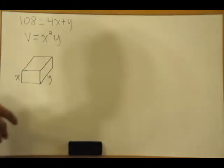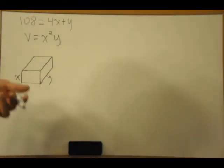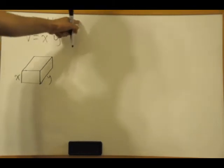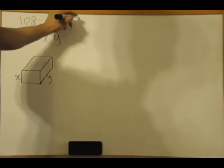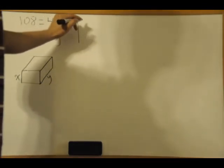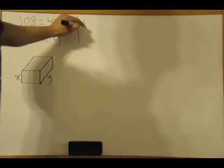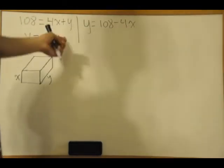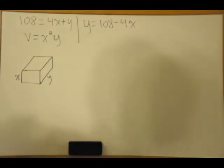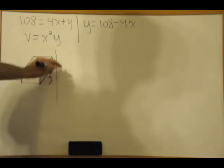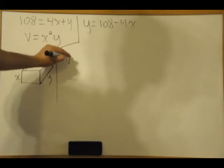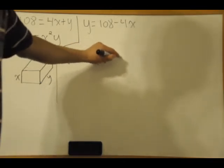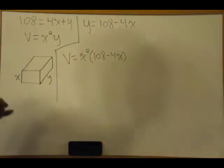This is an equation in both x and y, so we want to find an equivalent equation in one variable. We can use this equation 108 equals 4x plus y to create one variable. Solving for y, that's y equals 108 minus 4x. Now we just plug that into our equation for volume.